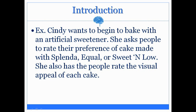Example number three — please try this one for yourself. Cindy wants to begin to bake with an artificial sweetener. She asks people to rate their preference of the cake made with Splenda, Equal, or Sweet and Low. She also has the people rate the visual appeal of each cake. Pause here if you need to and think of the dependent variable or dependent variables.